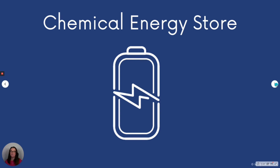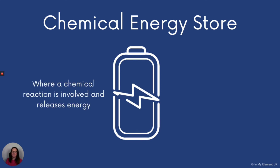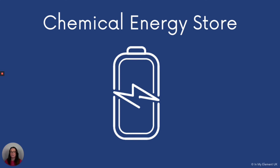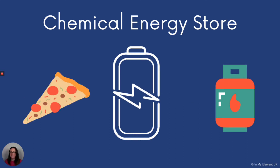Chemical energy — you've got an image of a battery there. Chemical energy can be found in anything that releases energy in a chemical reaction. A battery is an example of one, also food and fuel — all of those have a chemical energy store. So your pizza has a chemical energy store as food, the battery, and then the gas canister there as a fuel. When it's burned, a chemical reaction takes place and energy is released.